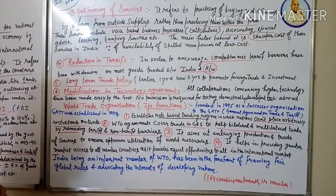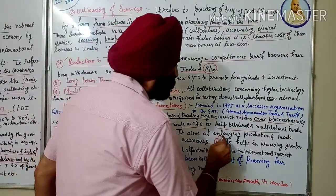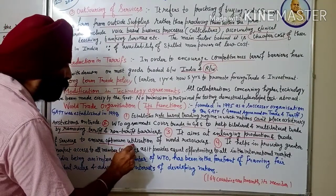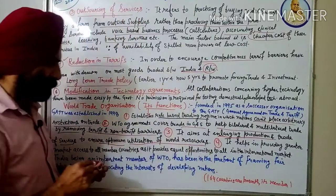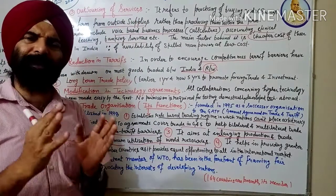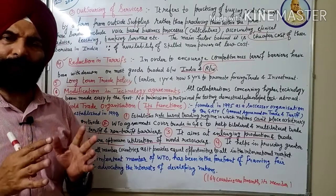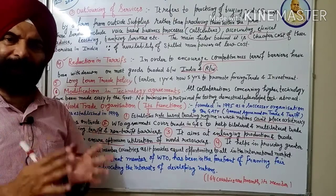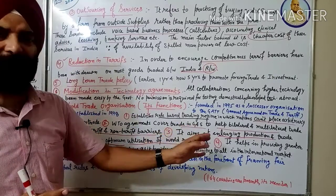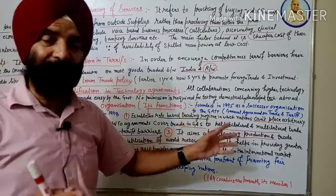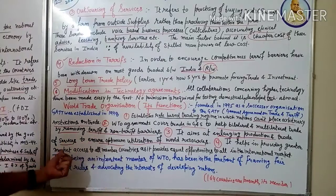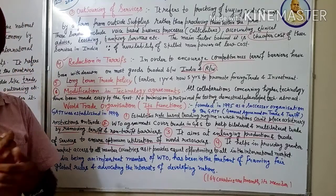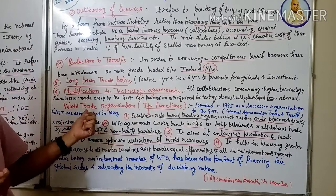Third function: It aims at enlarging the production and trade of services to ensure optimum utilization of world resources. So that the whole world's resources don't get wasted - their optimum use should happen, best use should happen. Keeping this in mind, it maintains good dealings with all countries and enlarges production and trade of services so that the best use of the world's resources is done. This is the third function of the WTO.